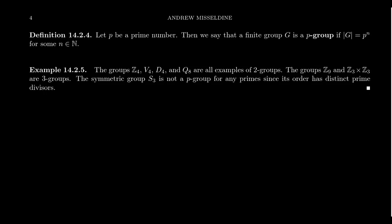What's a P group? In this situation, P is a prime number — it can be two, three, five, any prime number. We say that a finite group is a P group if the order of the group is P to the N, that is the order of the group is a power of a prime, or another way of saying that is that only one prime divides the order of the group.